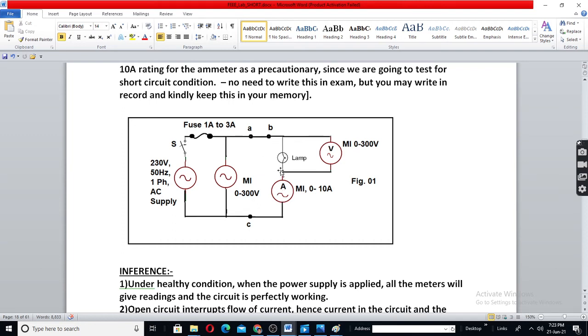As soon as you short between A and C, a high current will flow in ammeter. But we cannot do that in the laboratory.